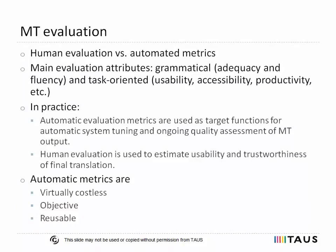There are two approaches to evaluate machine translation output – human and automated. Despite being costly and time-consuming, human evaluation of machine translation output still remains the most reliable method to assess translation quality in production environments. Automatic evaluation methods are typically used in the development process to guide fine-tuning and intermediate assessment of machine translation systems, while human evaluation is used to assess the final quality of a translation.